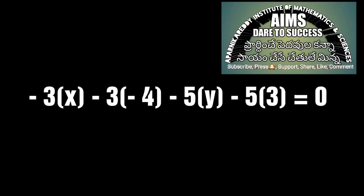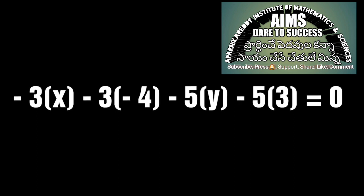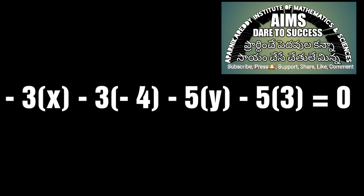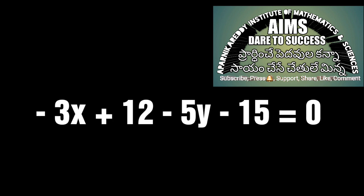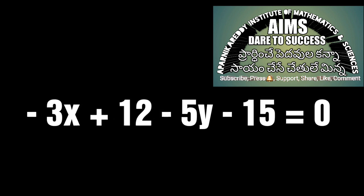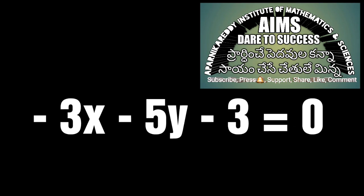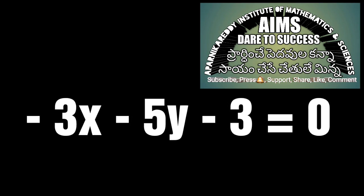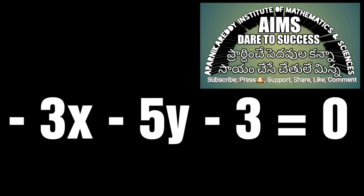Expanding: -3x - 3(-4) - 5y - 5(3) = 0. This gives -3x + 12 - 5y - 15 = 0, which simplifies to -3x - 5y - 3 = 0.